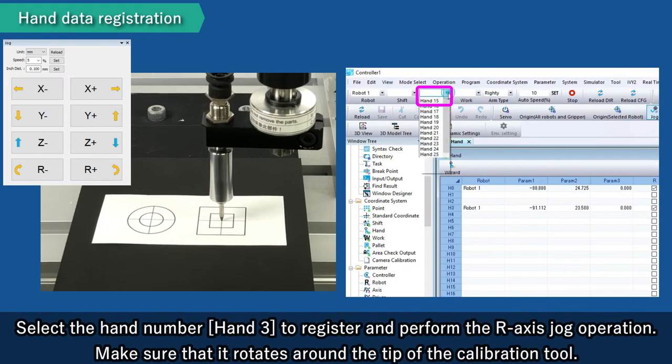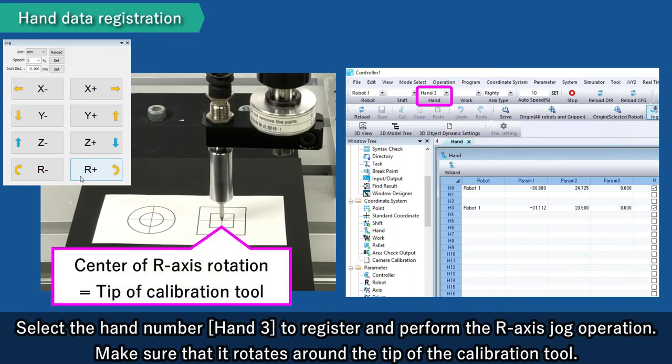Select the hand number Hand3 to register and perform the R-axis jog operation. Make sure that it rotates around the tip of the calibration tool.